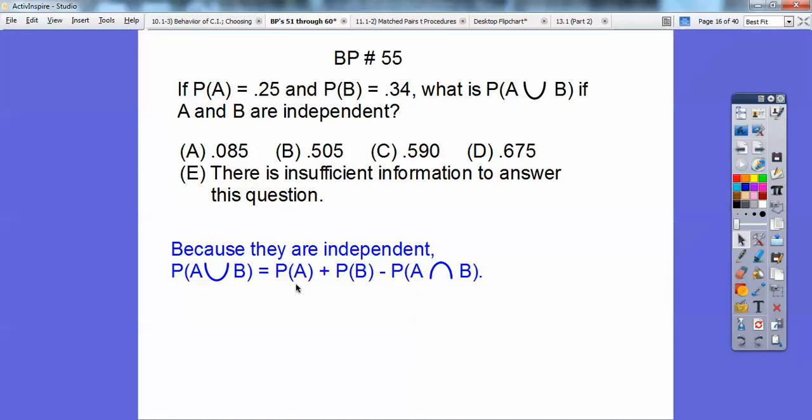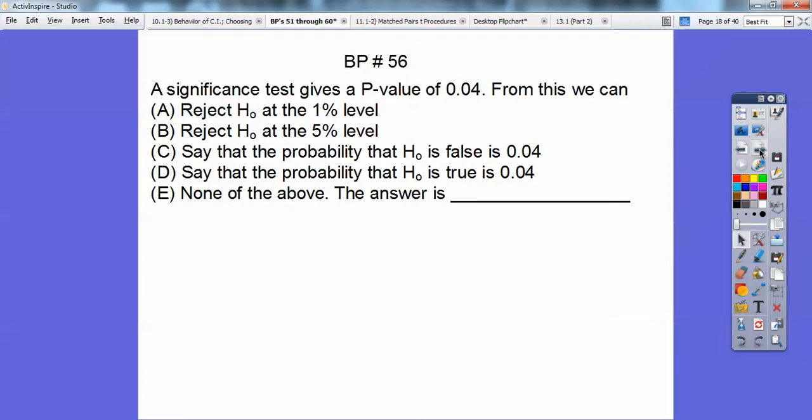So you have to subtract it out once. So that's why this formula is right here. So we're going to plug in 0.25 there, 0.34 there, and then this is going to be the product of those two right there. So we get choice B on that.